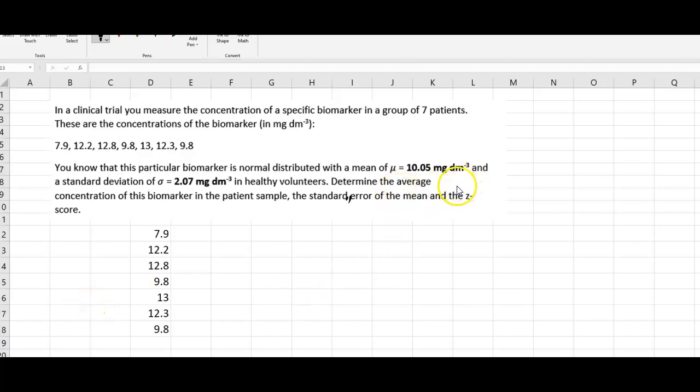In this particular example, we want to calculate the standard error of the mean and the Z-score of a sample. In particular, we have a sample of seven patients where we measure the concentration of a biomarker. We want to calculate the standard error of the mean and the Z-score for that. The first thing we need to do is calculate the sample mean.